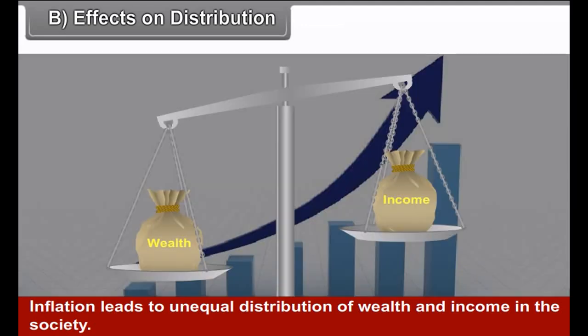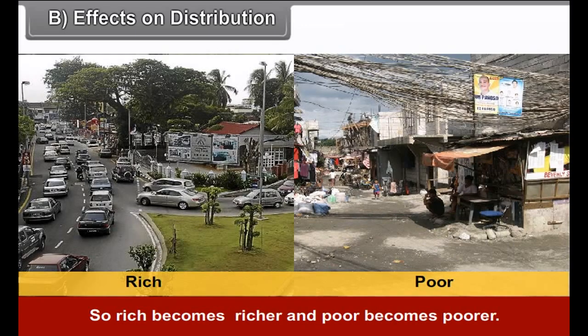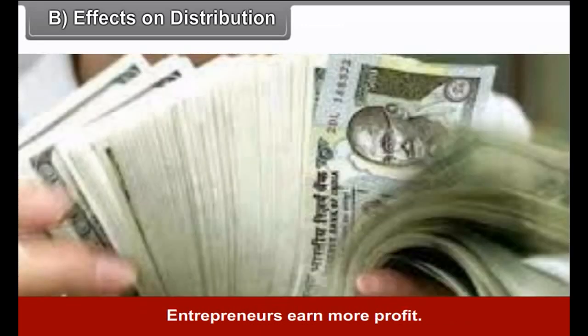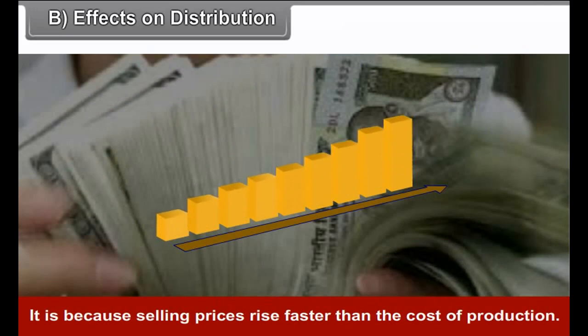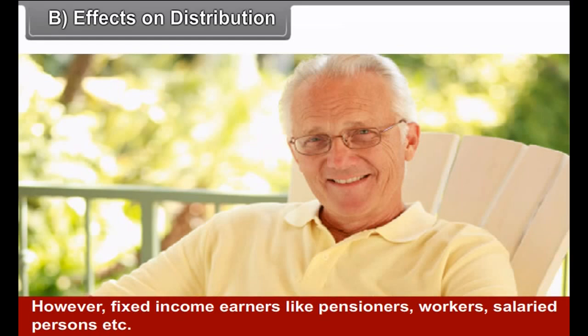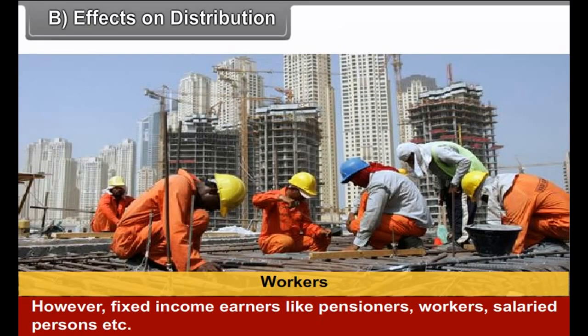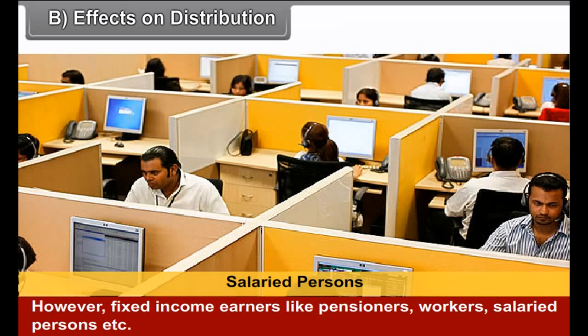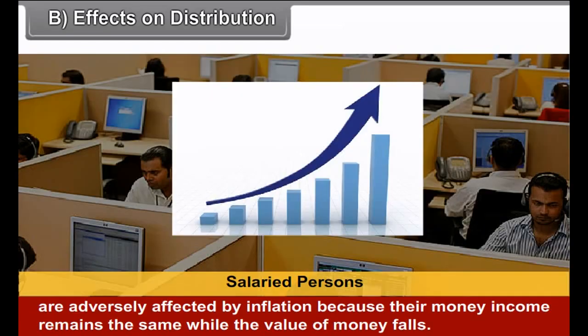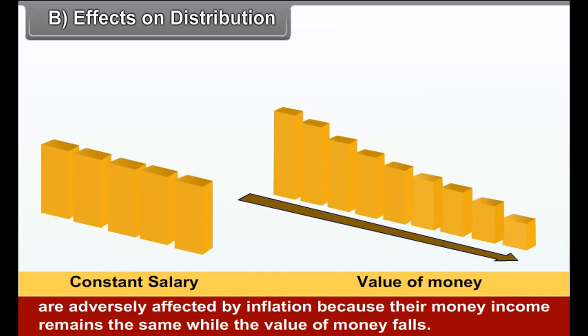Effects on Distribution. Inflation leads to unequal distribution of wealth and income in society, so the rich become richer and the poor become poorer. Entrepreneurs earn more profit because selling prices rise faster than the cost of production. However, fixed income owners like pensioners, workers, and salaried persons are adversely affected by inflation because their money income remains the same while the value of money falls.